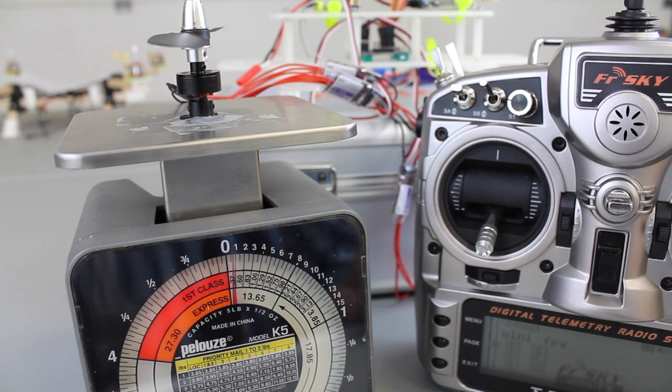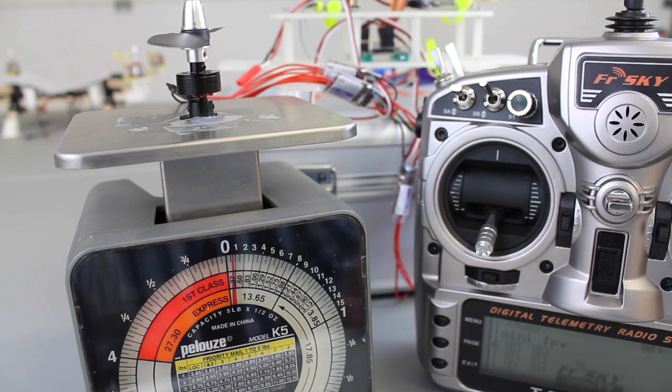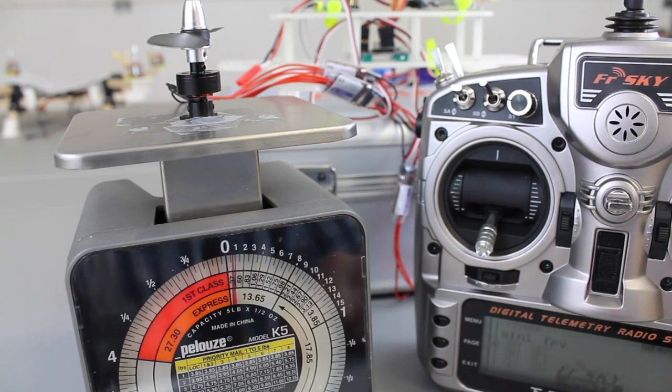So we'll just call that roughly 4.2 ounces per motor which is 120 grams roughly. So 480 grams of thrust. Now you do have to account for the weight of the motor already displaying on that scale.